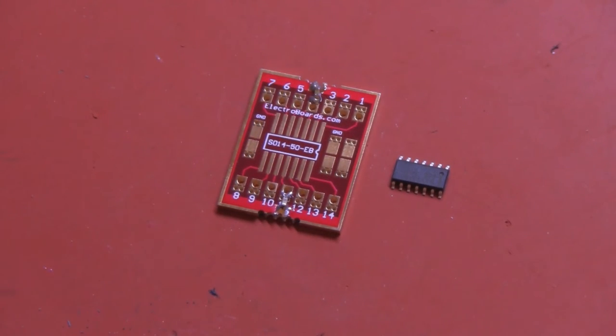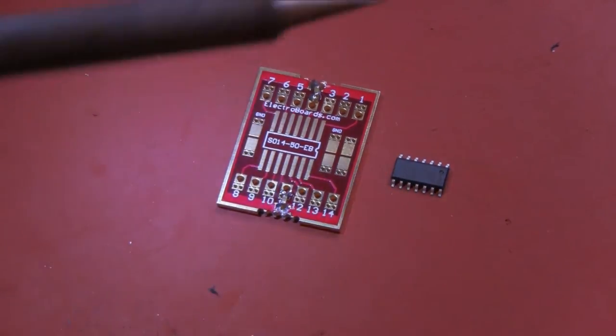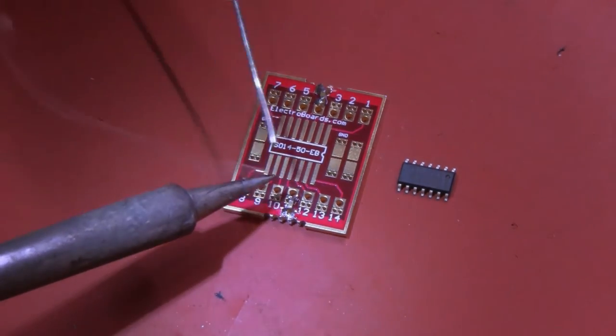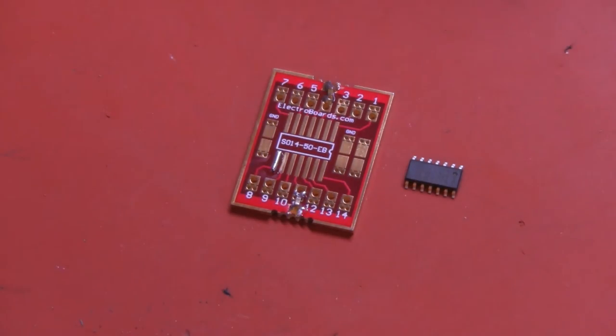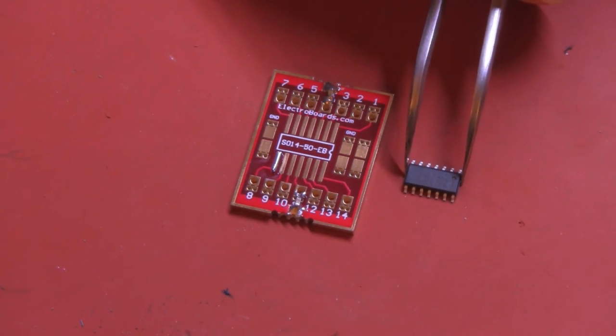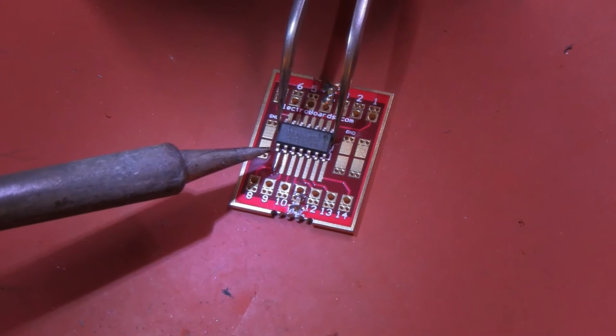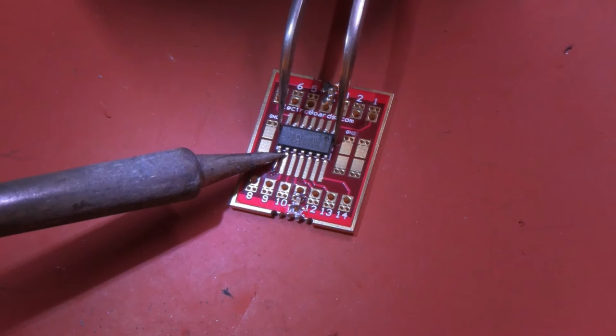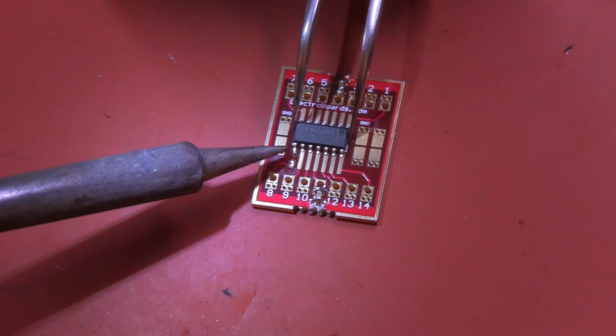So the next step is to put on the chip. Before I put on the chip, I usually tin one of the corner pads, in this case pin 8. That gives the chip something to stick to when we first place it on the board. Takes a little practice, you eventually get the feel for it. And when you're lined up just right, you tack it down.